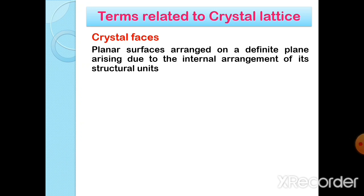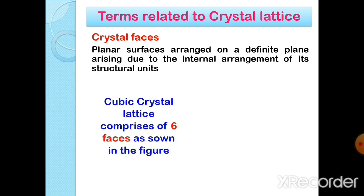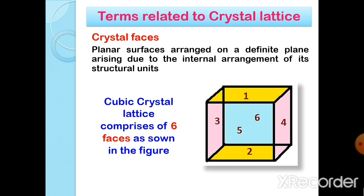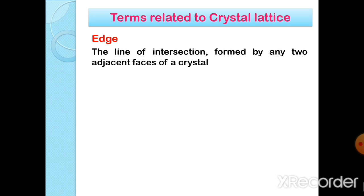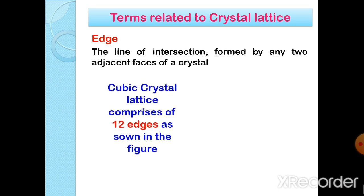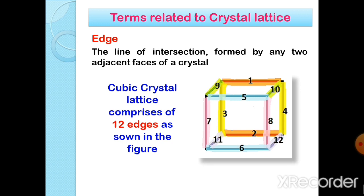Let us know some terms related to crystal lattice. Crystal faces are the planar surfaces arranged on a definite plane arising due to the internal arrangement of structural units. A cubic crystal lattice comprises 6 faces, as shown in the figure — you can count 1, 2, 3, 4, 5, and 6. Edge: the line of intersection formed by any two adjacent faces of a crystal. A cubic crystal lattice comprises 12 edges, as shown in the figure — you can count 1 through 12.